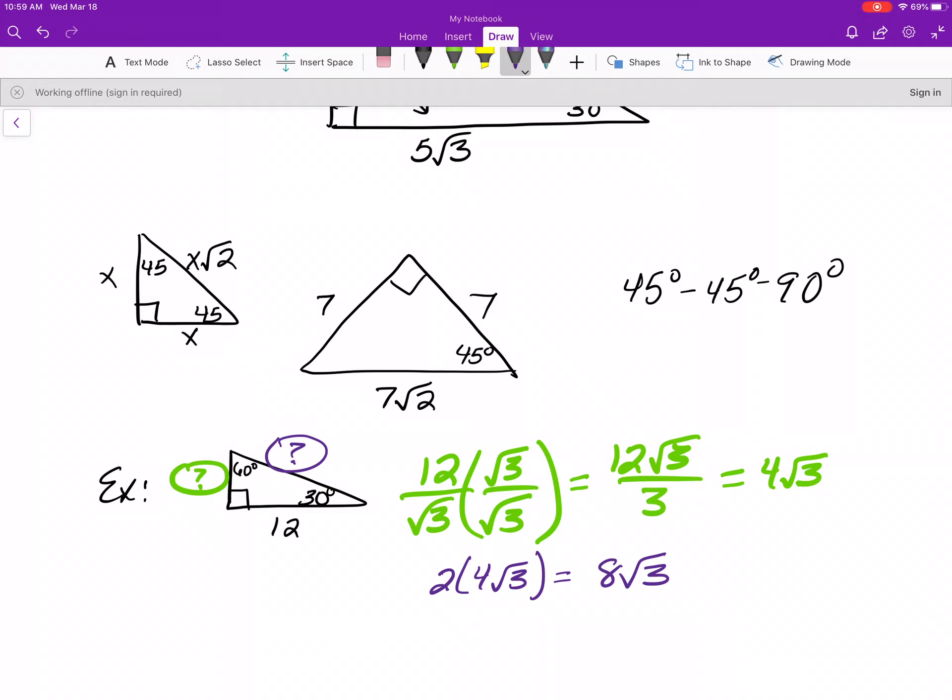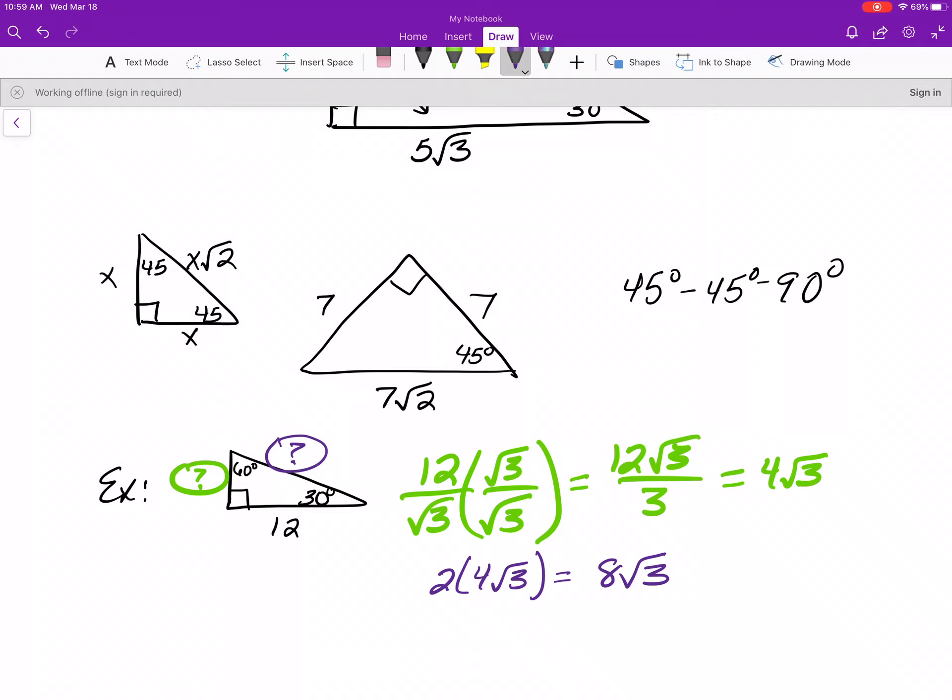Pythagorean theorem, I think you guys know how to do that. You know how to find the missing angles of a triangle by subtracting from 180. All right. Last thing.